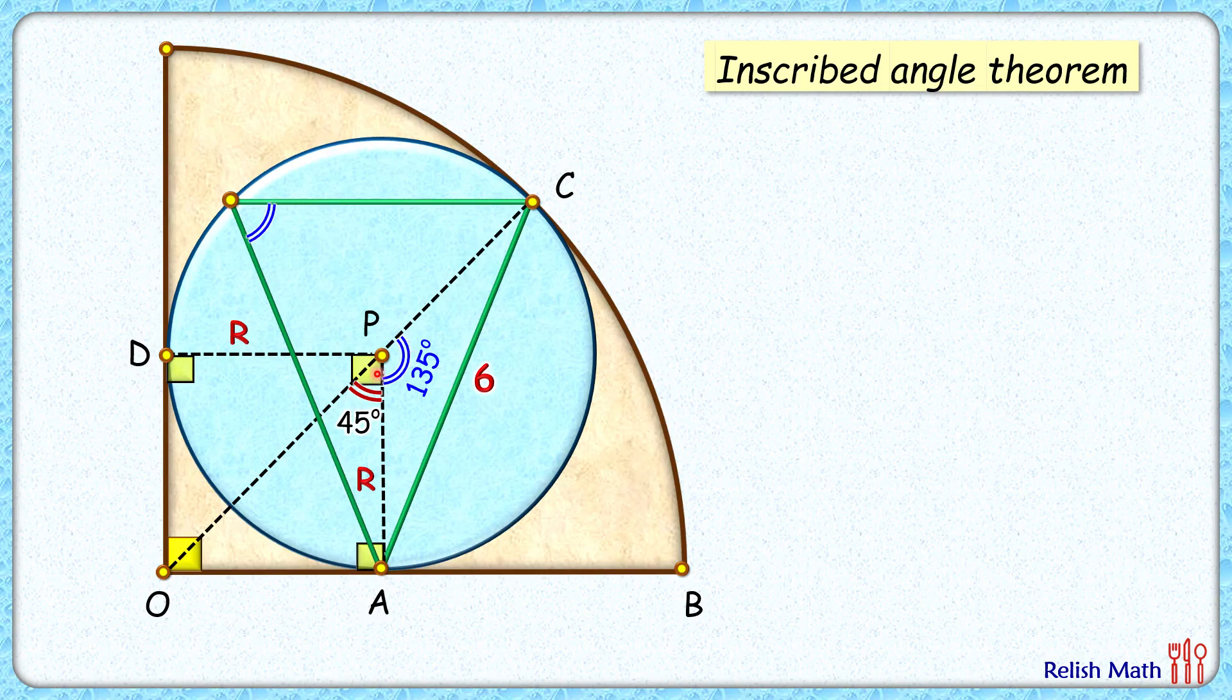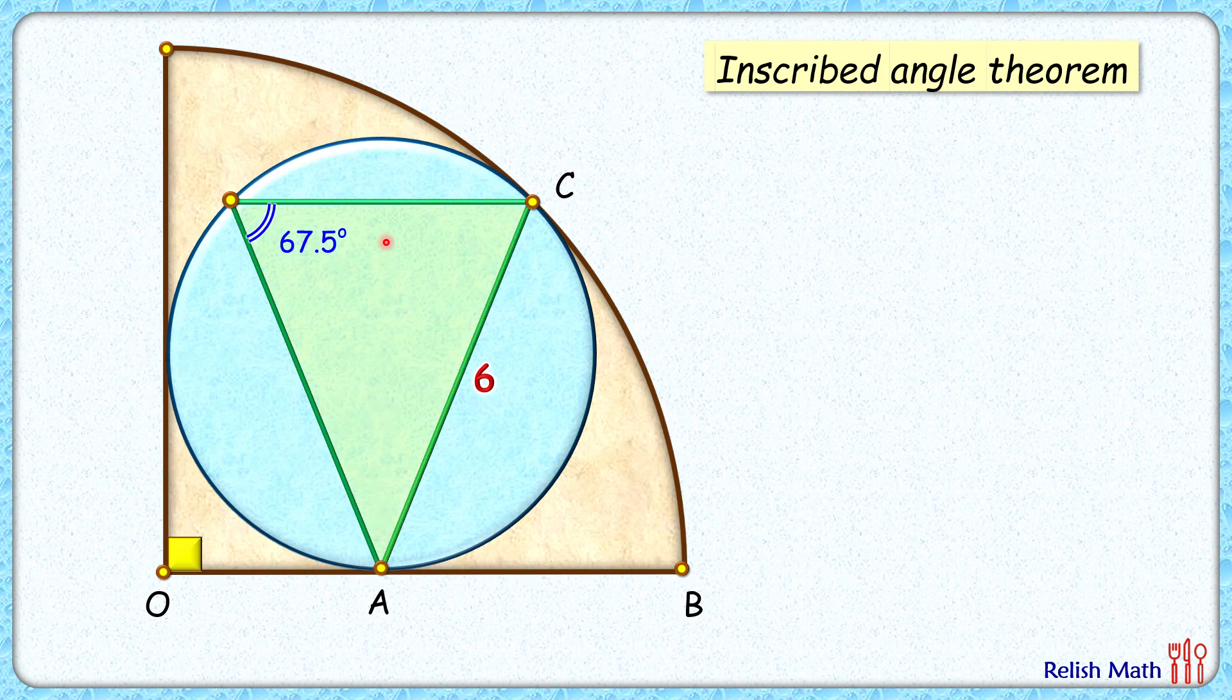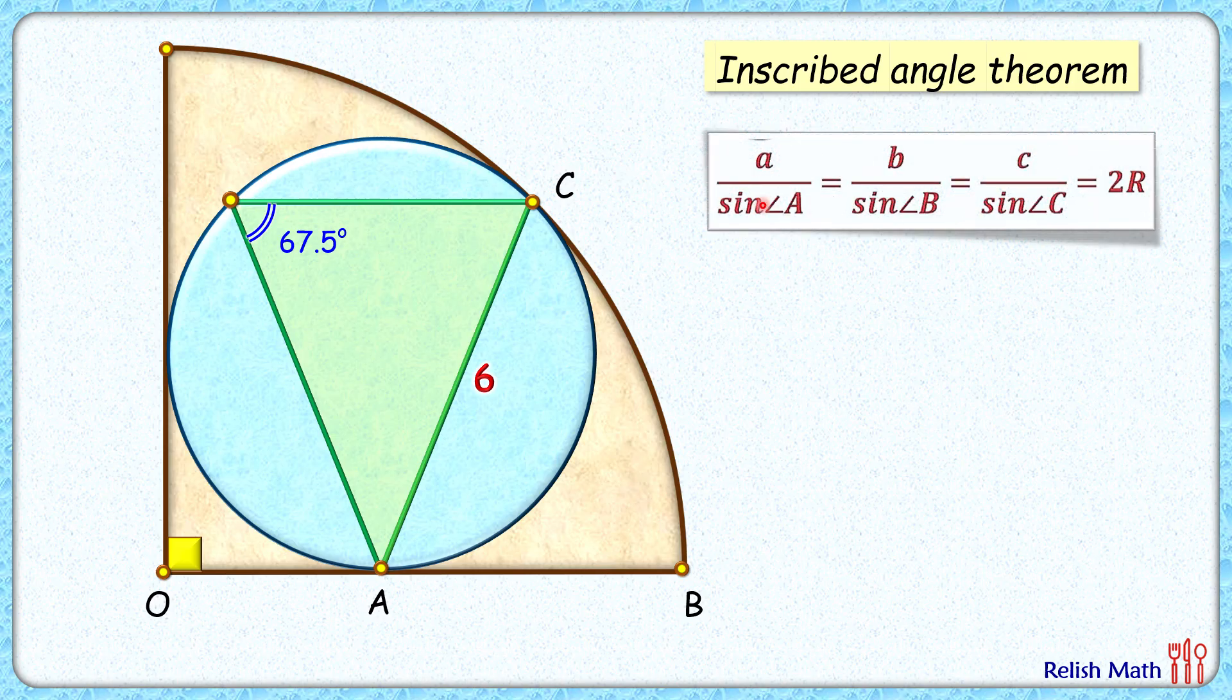Now in this green triangle, if we apply sin law that says a upon sin A equals b upon sin B equals c upon sin C equals two times r, where r is circum radius. With respect to this green triangle, the blue circle is the circum circle.